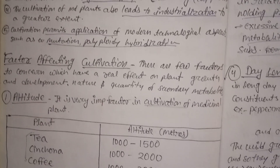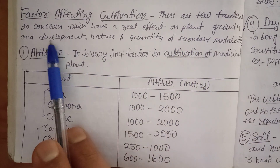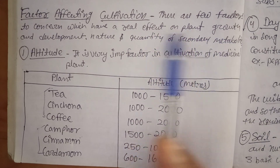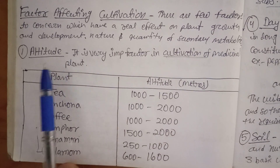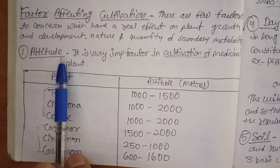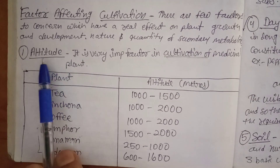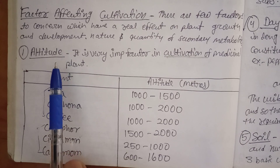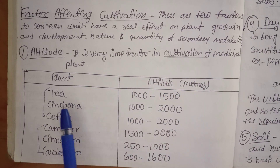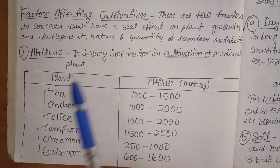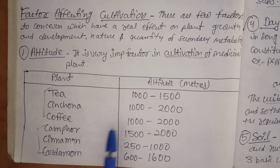Now coming to the factors affecting cultivation — this is the topic we are going to discuss. There are a few factors which have a real effect on plant growth and development, and the nature and quantity of secondary metabolites or active constituents. The first factor is altitude — the height from sea level. Altitude is a very important factor in cultivation of medicinal plants. When writing this answer, you can write the plant on one side and the altitude in meters on the other.